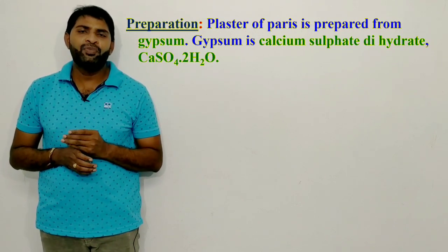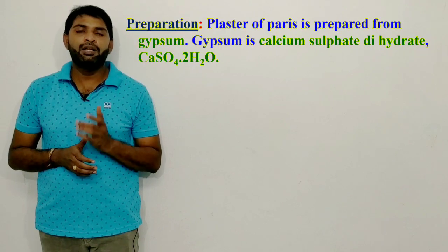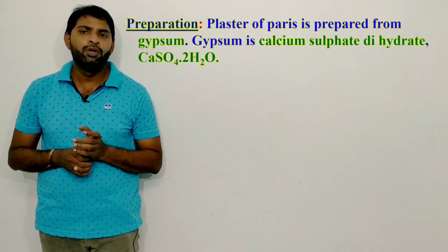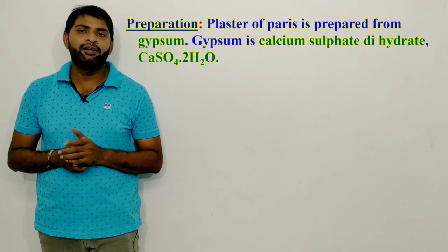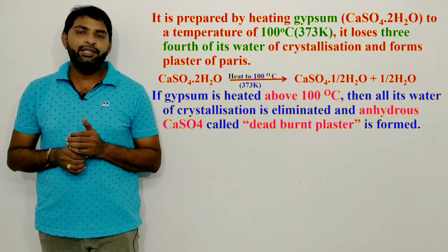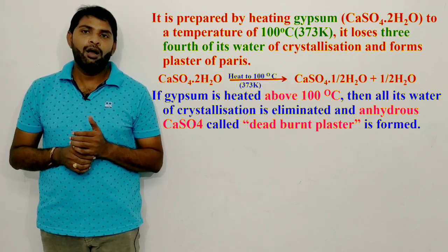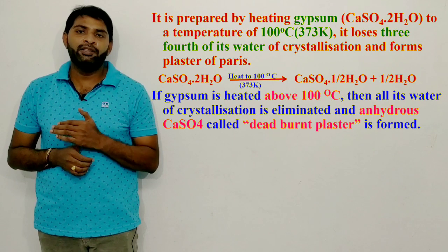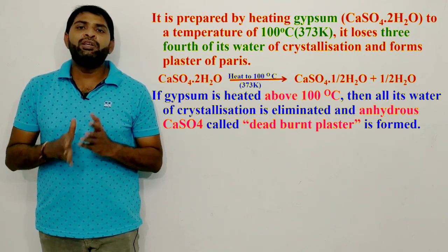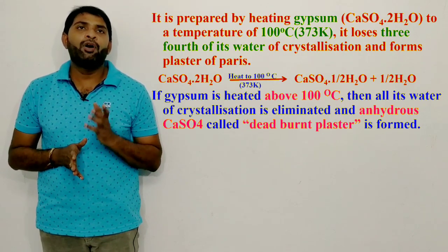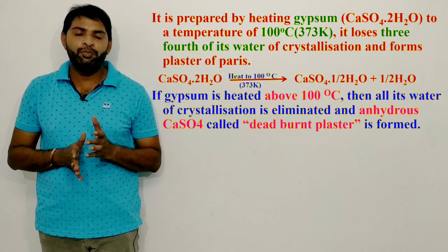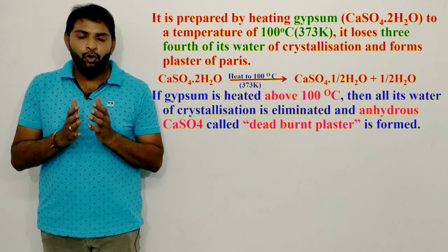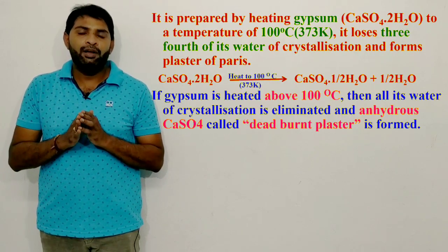Plaster of Paris is prepared from gypsum. Gypsum is calcium sulfate dihydrate, CaSO4·2H2O. Plaster of Paris is prepared by heating gypsum to a temperature of 100°C (373 K). On heating, gypsum loses three-fourths of its water molecules of crystallization and forms Plaster of Paris.